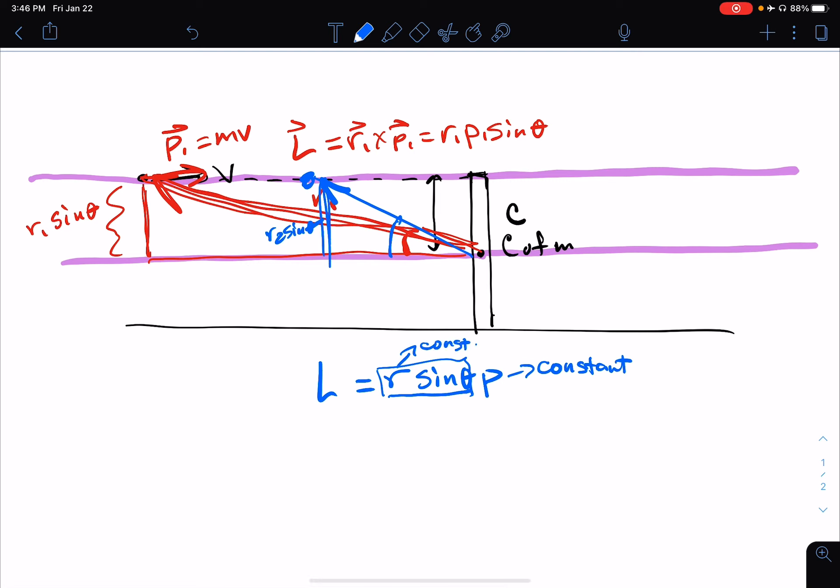R is getting shorter, sine of theta is getting bigger, and you'll notice that we start with an angle that's closer to zero, and it got bigger. So R times sine of theta may be a constant, but R is getting smaller as theta is getting bigger. So the product of those two is a constant. So that means the angular momentum is the constant value R times sine of theta times P, and it's not going to change. So that means that angular momentum is also a constant.